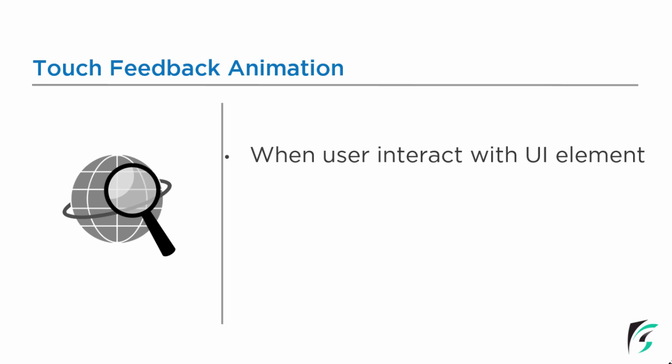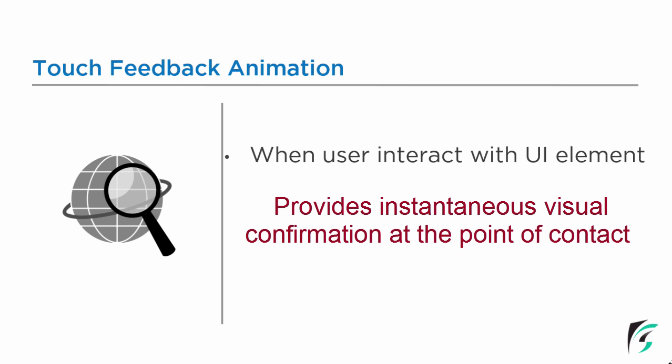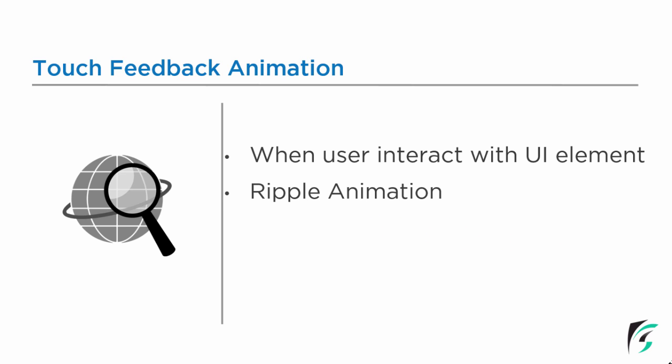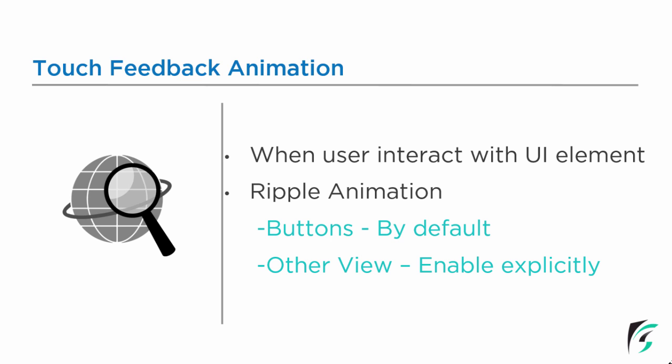What basically is touch feedback animation? It is the animation which provides an instantaneous visual confirmation at the point of contact when the user interacts with UI elements in our application. The ripple animation is one of them. Buttons are provided with the ripple animation by default, so we don't need to define it for buttons. For other views we need to enable it explicitly.